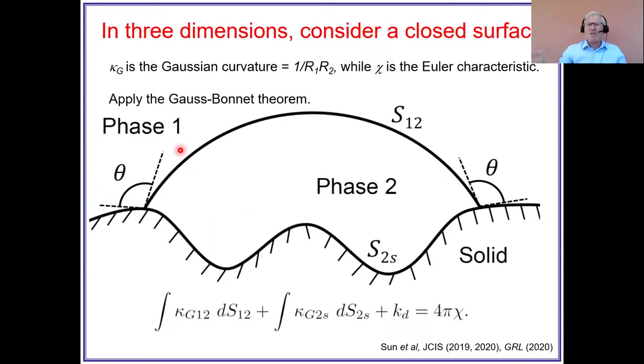But we're in three dimensions so what happens in three dimensions? Well in three dimensions we have a remarkable theorem, the Gauss-Bonnet theorem that says that the integral of this Gaussian curvature, which is you've got two radial curvature in three dimensions, one in one direction, one in the orthogonal direction. If you take the product of those and integrate around an object, this is equal to four pi times an Euler characteristic which is a measure of topology.